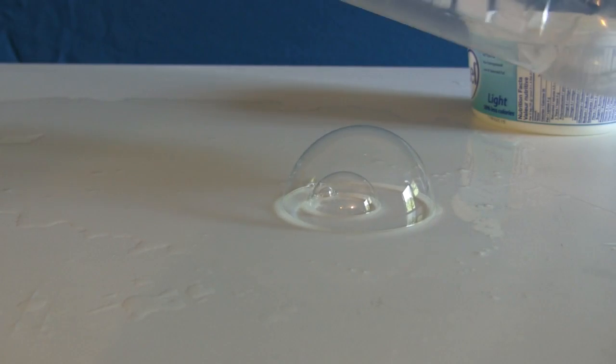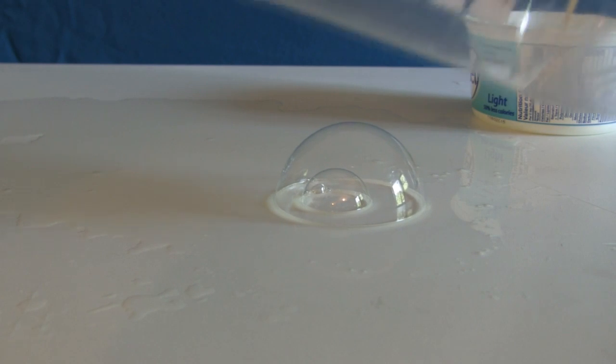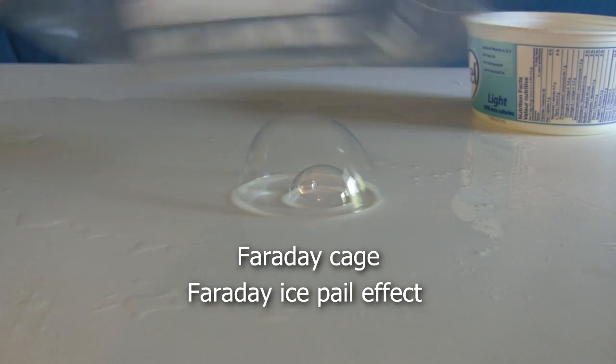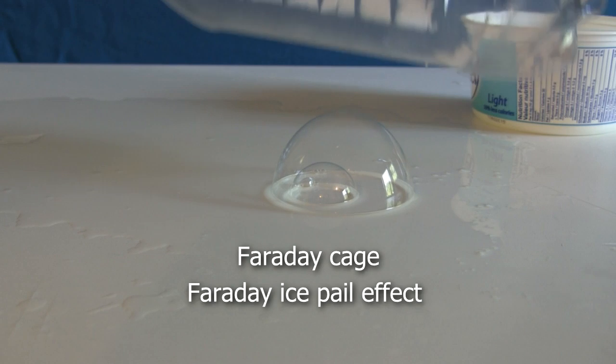And what about our smaller bubble that didn't move? It wasn't attracted because it's inside the bigger bubble, and the bigger bubble is acting like an electrically conductive container. It's a Faraday cage, which is related to the Faraday ice pail effect. The Faraday cage protects objects inside it from external electric effects.